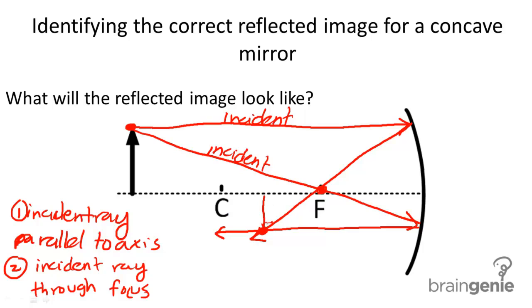So, here, as a result, we have an image that is upside down, inverted, and smaller than the original. And that's this. So, our reflected image is something along the lines of this.